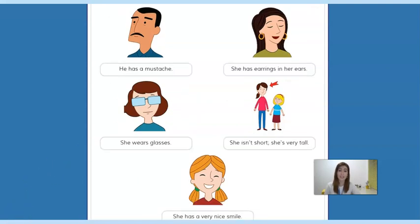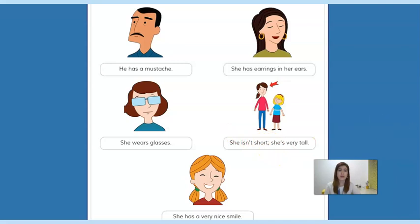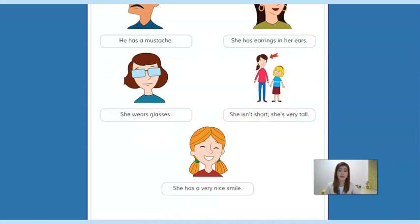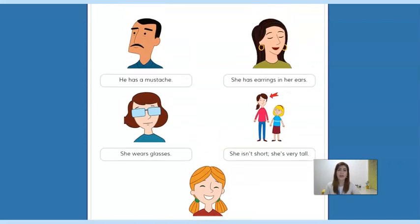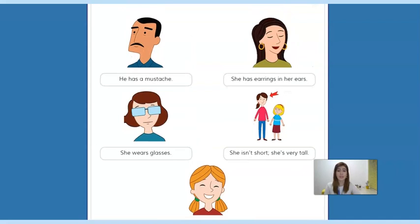Here are the answers. He has a mustache. She has earrings in her ears. She wears glasses. She isn't short — she's very tall. And she has a very nice smile. So that's it for this unit. I hope you've enjoyed the activities. See you later — bye-bye!